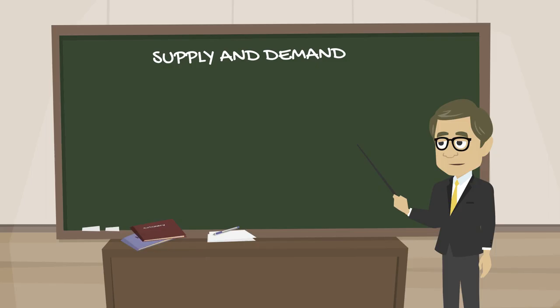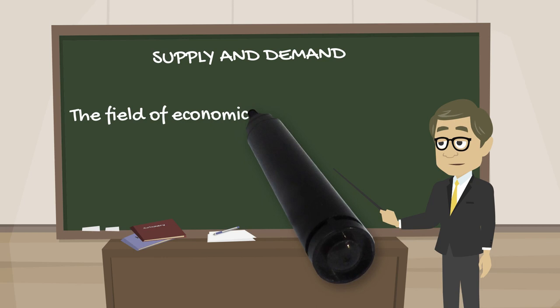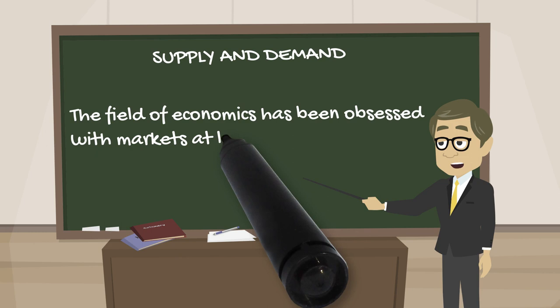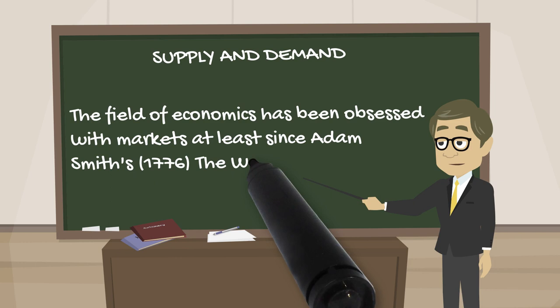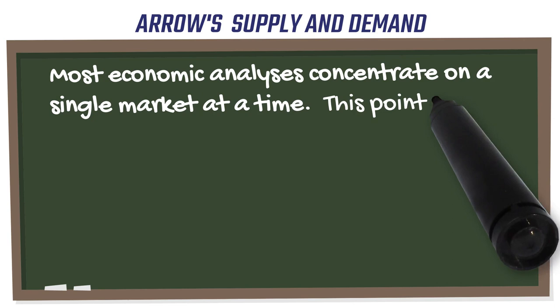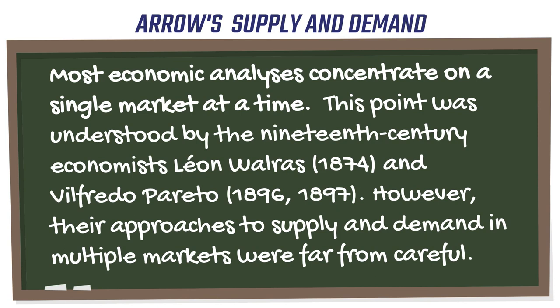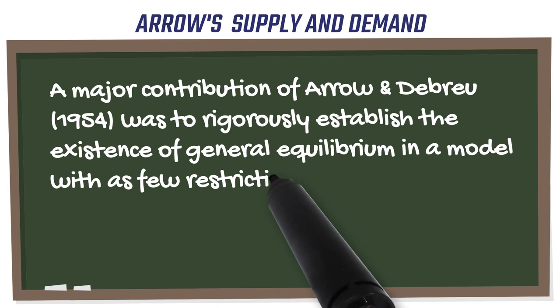Arrow analyzed the familiar problem of supply and demand. In a well-functioning market for a single good such as apples, there is an efficient outcome with a price at which the number of apples supplied would equal the number of apples demanded. But that was just one market. It was influenced by the market for pears, for agricultural land, for farm laborers and even for bank loans. Each market pushed and pulled on others. What happened when one considered the interactions between every market in the world?